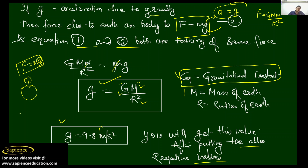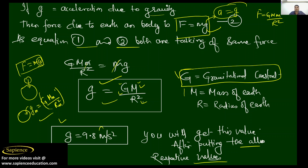Suppose I am talking about the moon. I want to find the acceleration due to gravity on the moon. What do I do? I just write G times mass of the moon divided by radius of the moon squared. If you do this, you get the gravity on the moon. Whenever you want the acceleration due to gravity on any planet, any moon, or any sun, you use this method to find it.